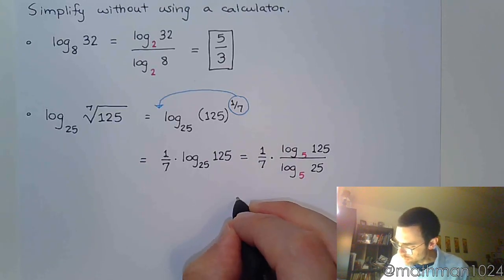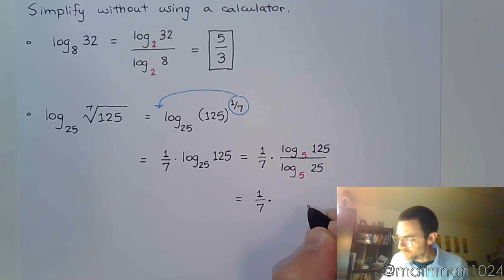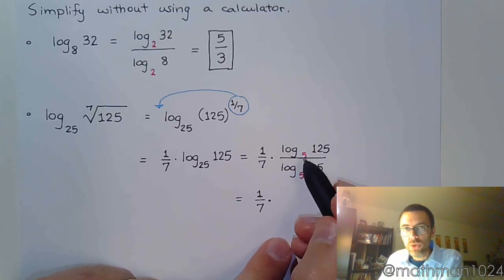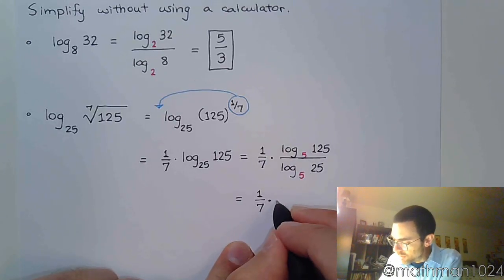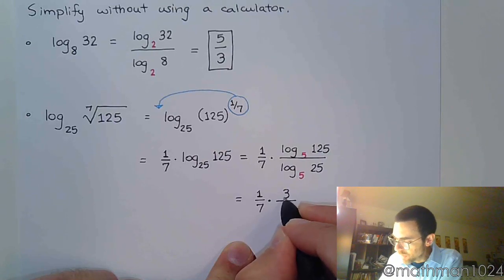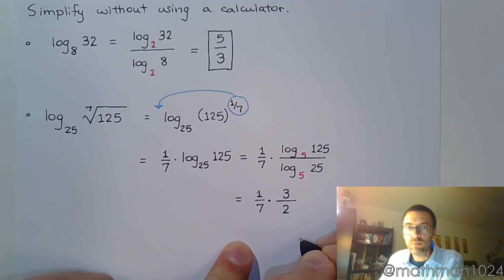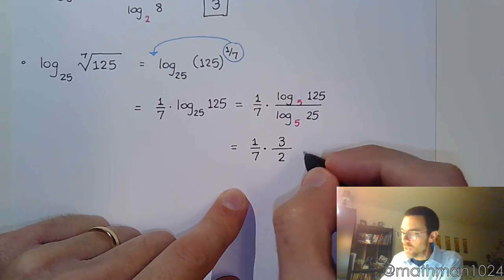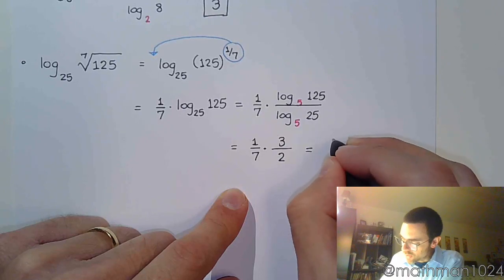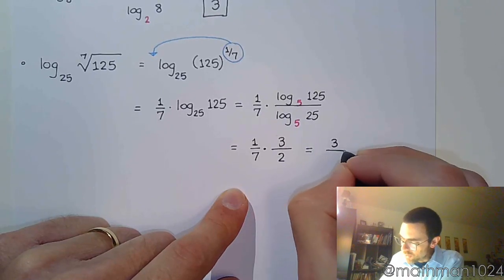Because now, we've got 1/7th. And you know this answer. You know the power of 5 that gives you 125 is 3. And the power of 5 that gives you 25 is 2. And so, to finish this problem, you multiply these two fractions straight across. And you get 3 over 14.